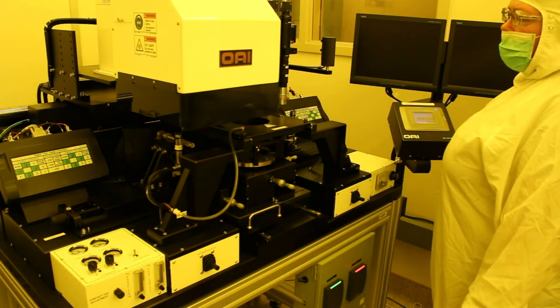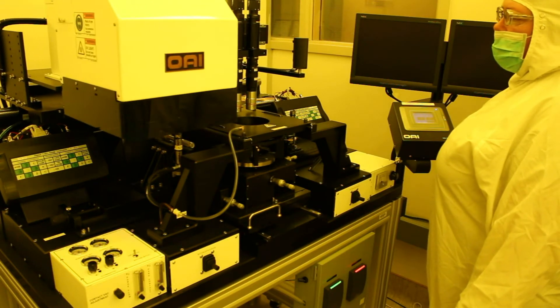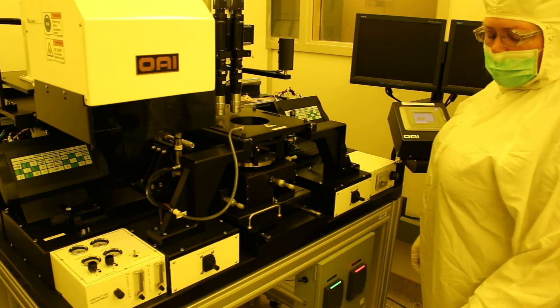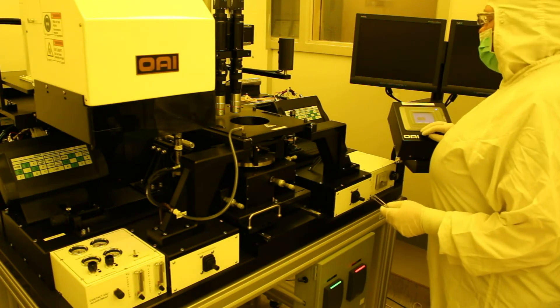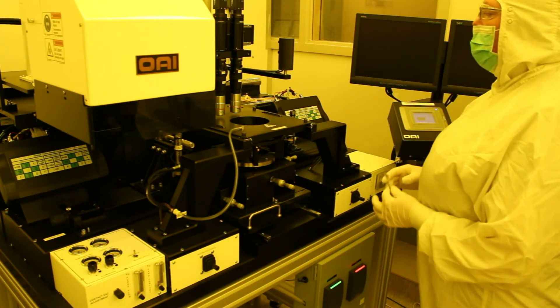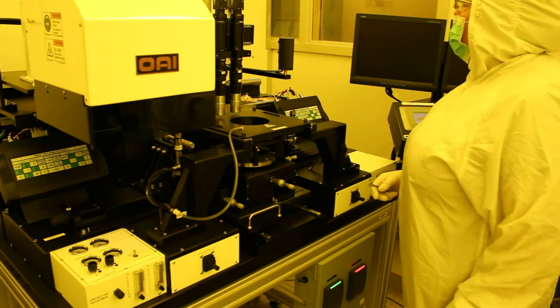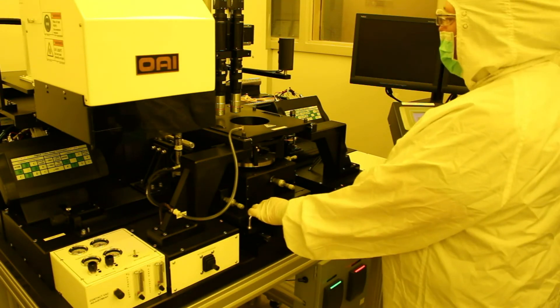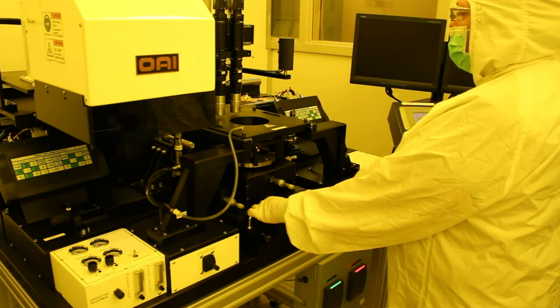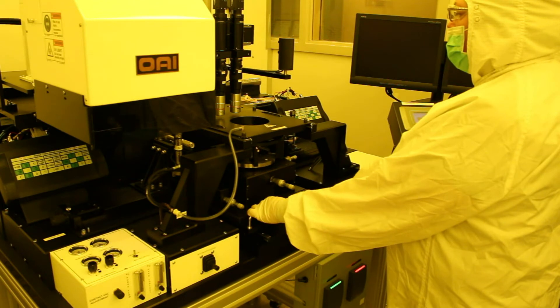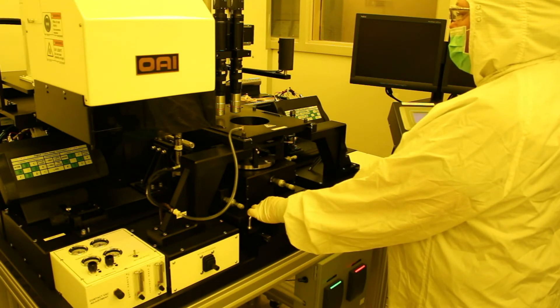Thick resists usually require a very long dose. Thinner resists usually require a very short dose. Once the exposure is done, the system will pull the substrate down into a larger gap from the mask so that we can pull the substrate holder out from in the tool.